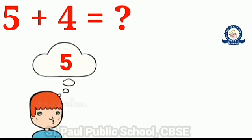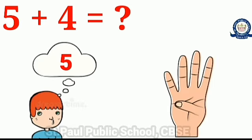So children, what is the next number? Yes, four is the next number. You have to keep four fingers in your hand. After keeping the number four in your hand, you have to say five on the mind and four on the finger.